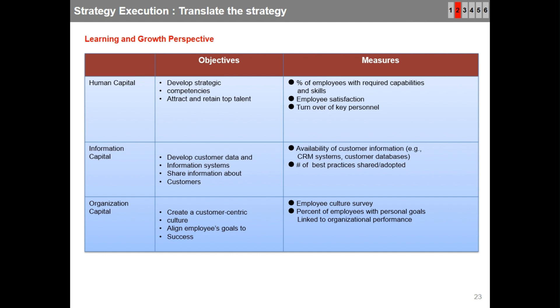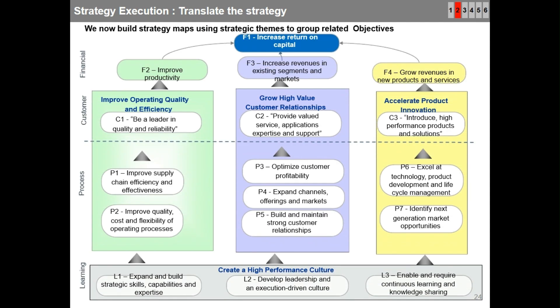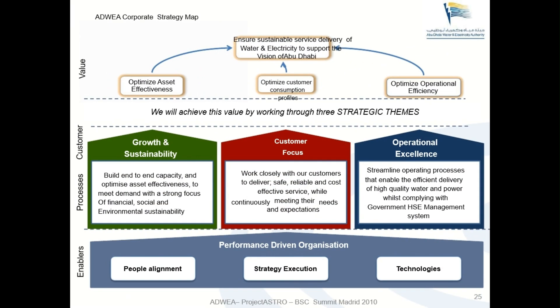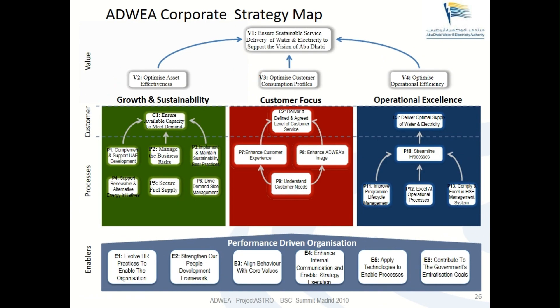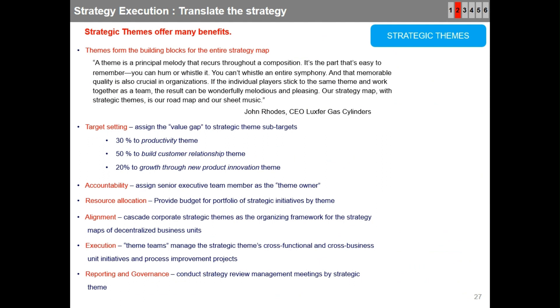This is an example strategy map for your understanding — a theme-based strategy map. The strategy map with strategy themes, objectives, and linkages is clearly seen. To summarize, strategic themes offer many benefits: target setting, accountability, resource allocation, alignment, execution, and reporting and governance.